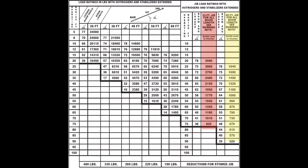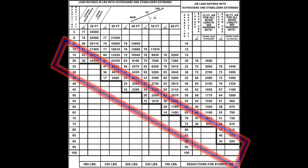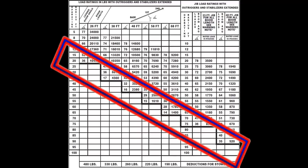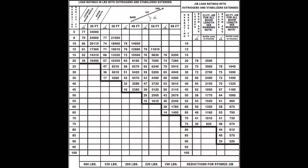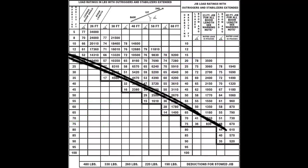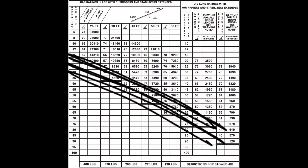If you notice, there is a black line that runs across the load chart — it kind of looks like a few steps. This line distinguishes the structural versus stability factor. Do not under any circumstances breach the structural representation.